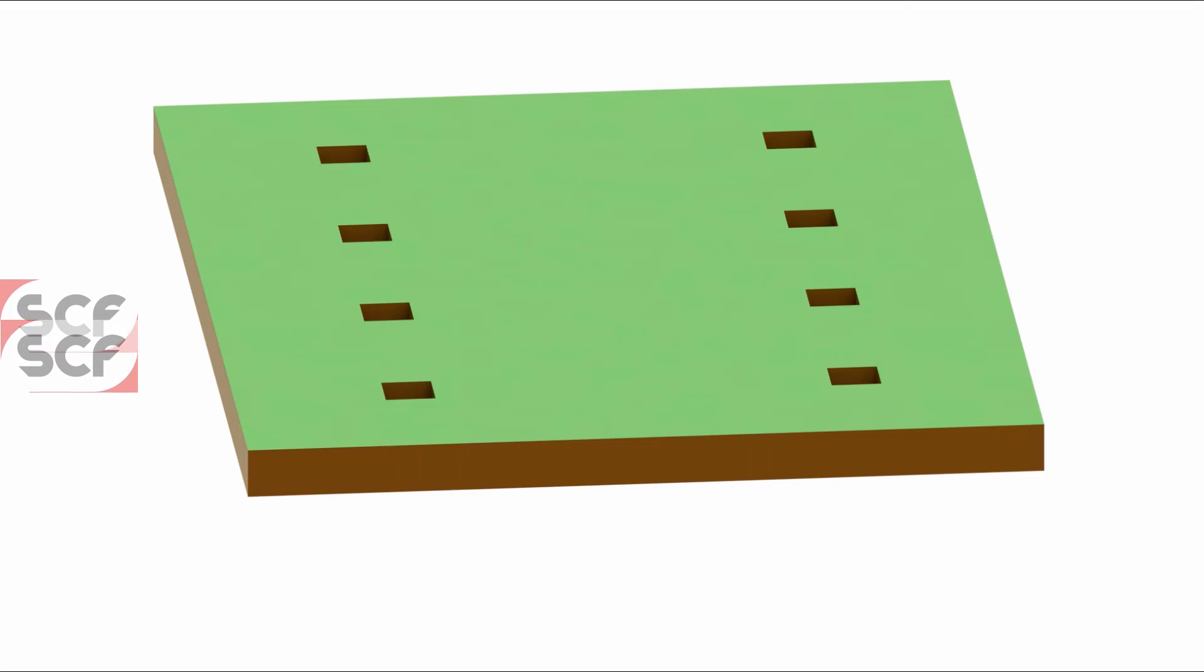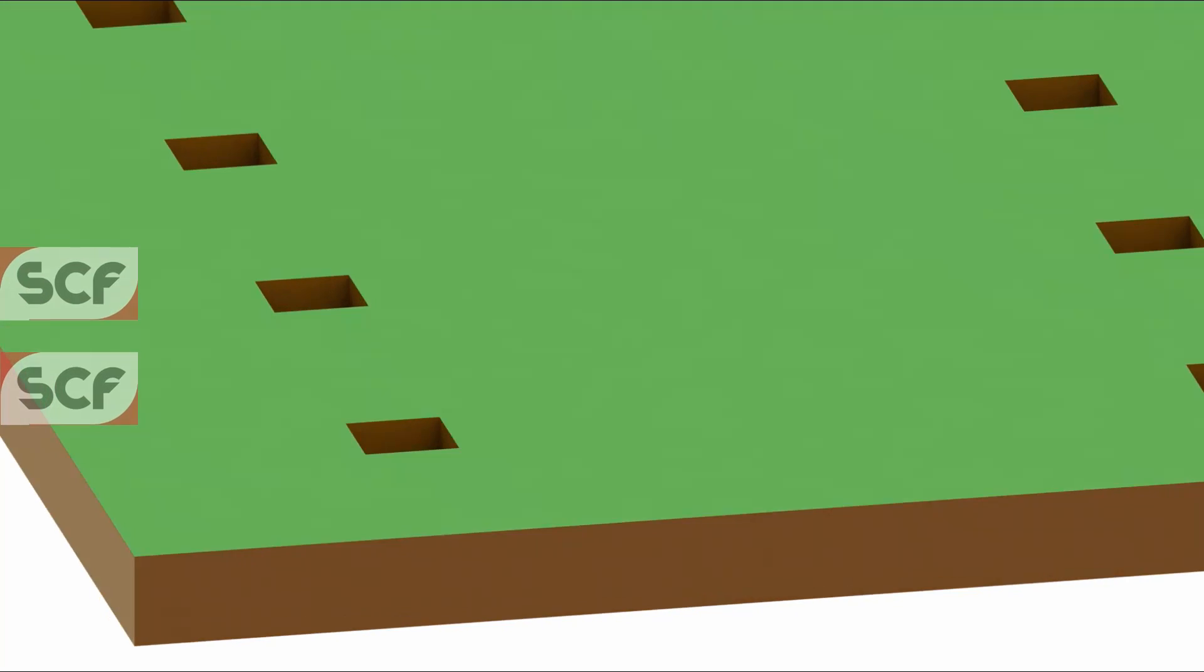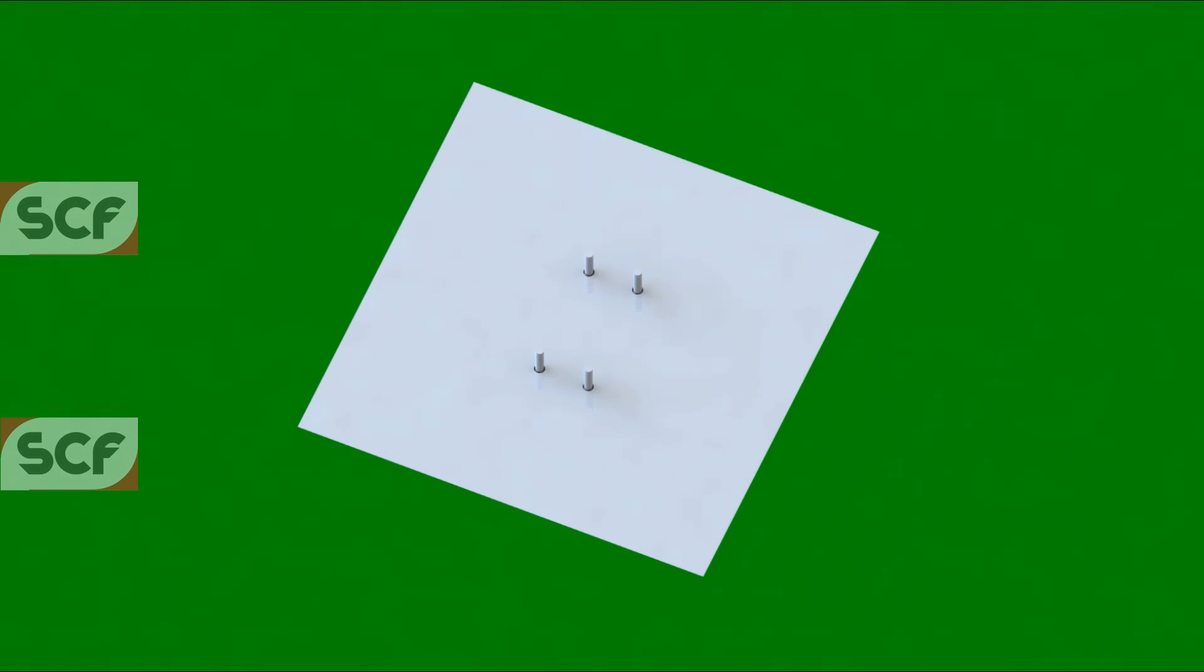Once the foundations have set, drill the holes and fill them with the ChemFix solution. Insert all the threaded rods and wait an hour for it to properly set.